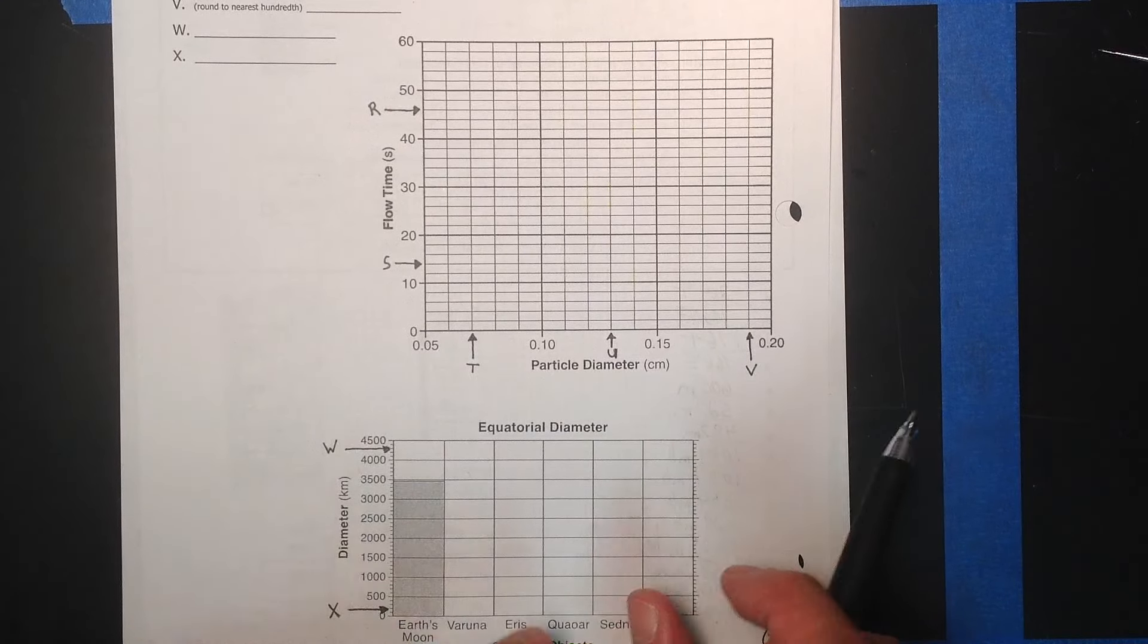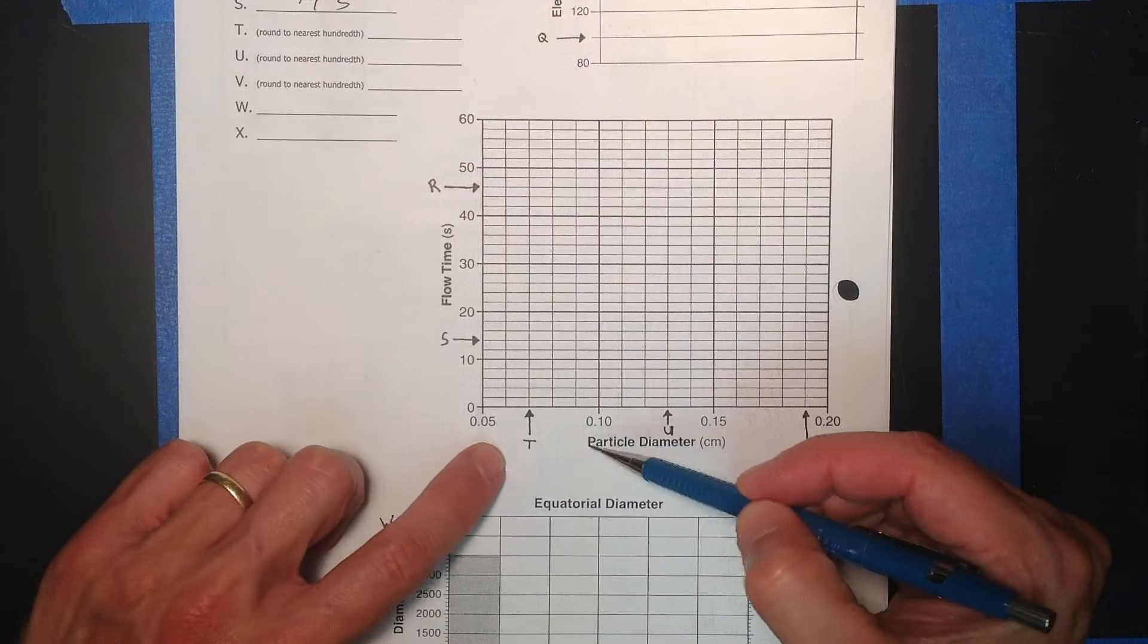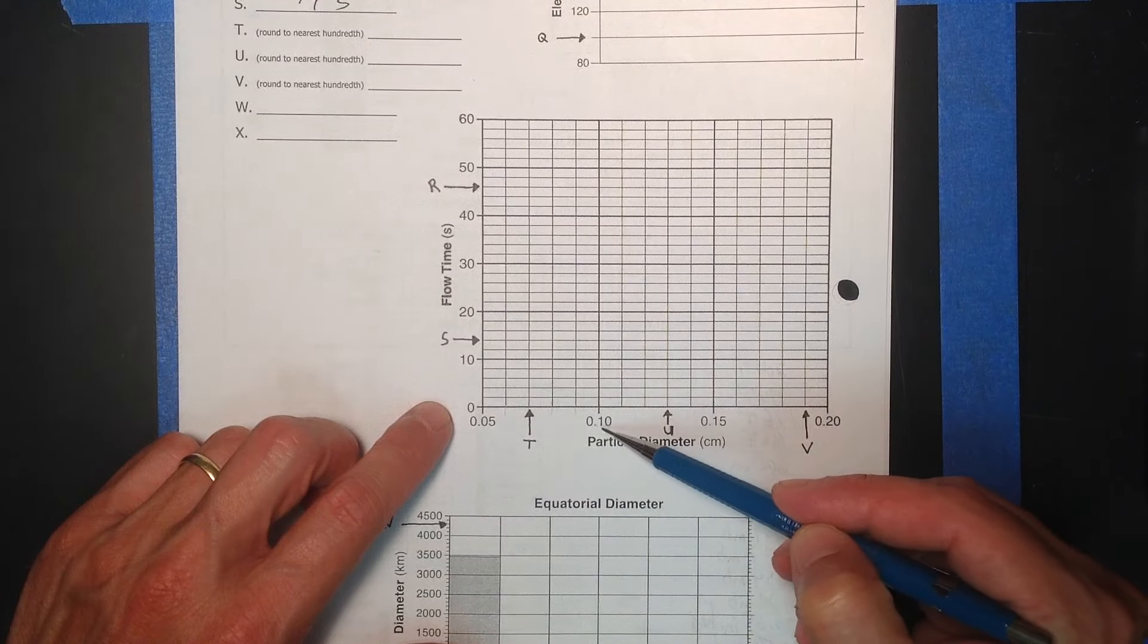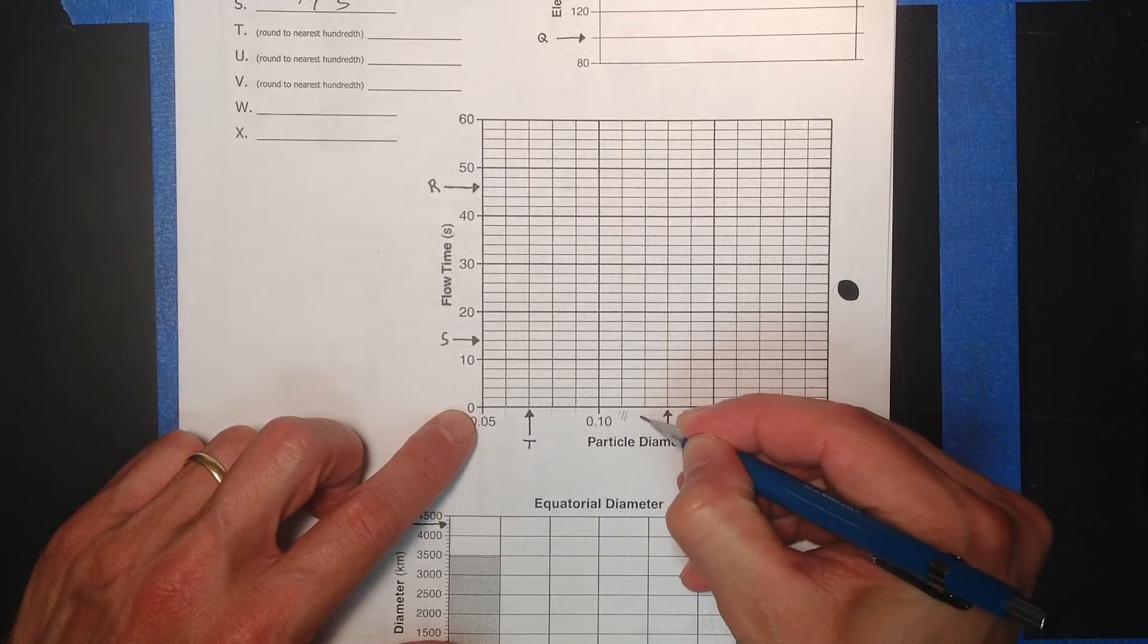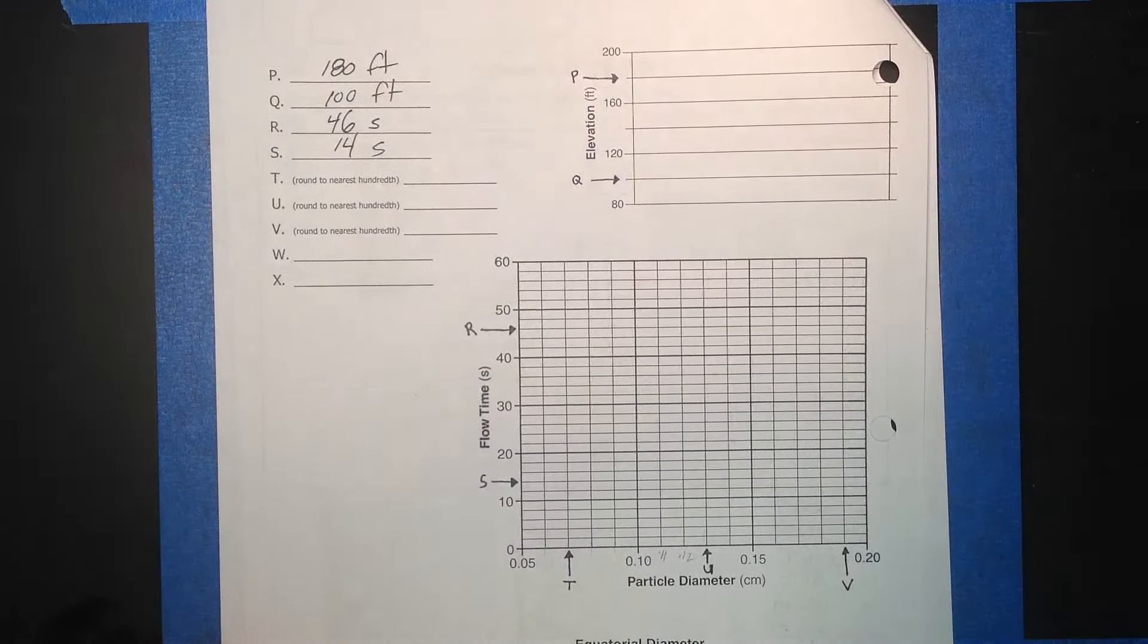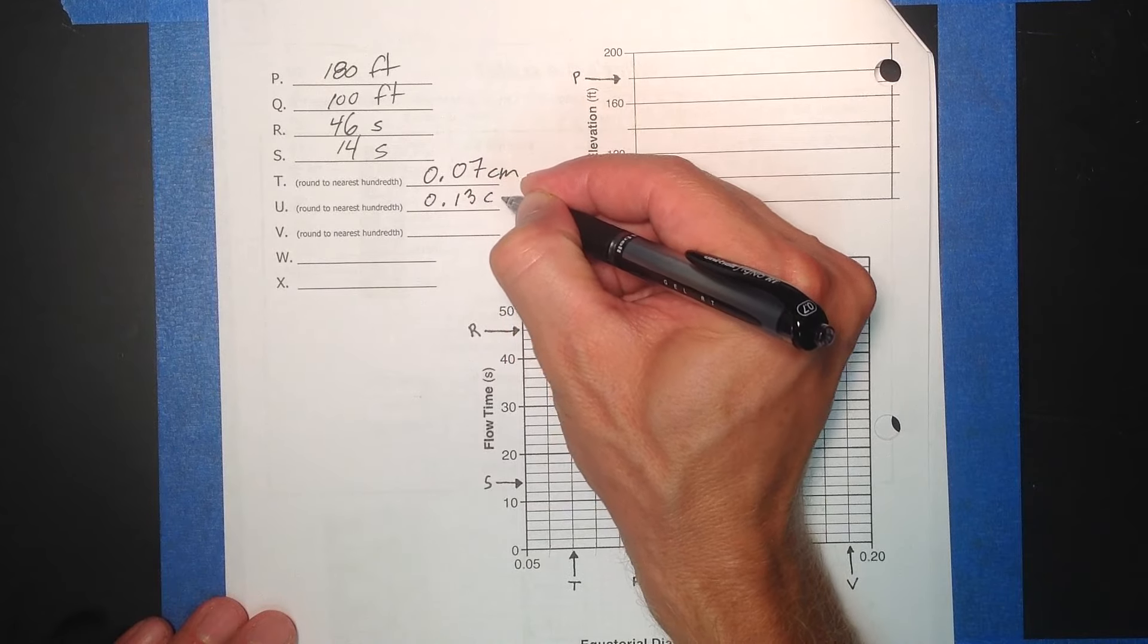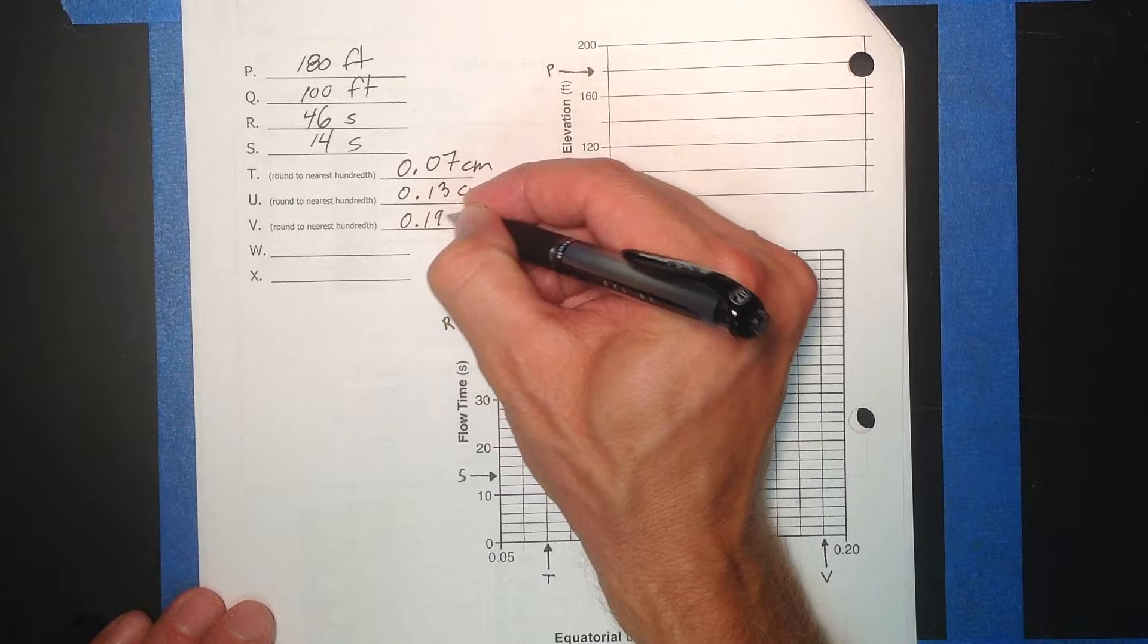T is down here. Particle diameter, how big like a piece of sediment is or a pebble in centimeters. This is the decimals. Again, are the more challenging parts for students. 0.05, 0.10. And you gotta just try to count them out. And it ends up going by 0.01. So this is 0.06, 0.07, 0.08, 0.09, 0.10. And that may be a little hard for you. Maybe this is better. This is 0.10. This is 0.11, 0.12, 0.13, 0.14, 0.15. That may help. So T is 0.07 centimeters. And U is 0.13 centimeters. And V is 0.19 centimeters.